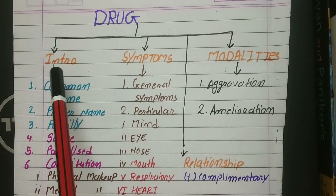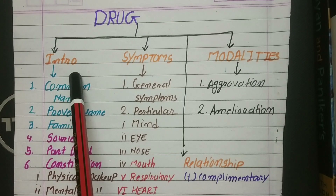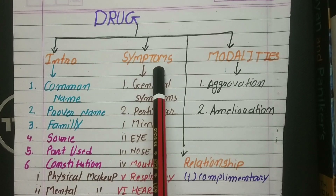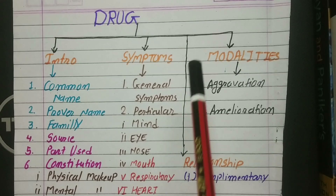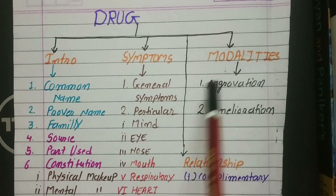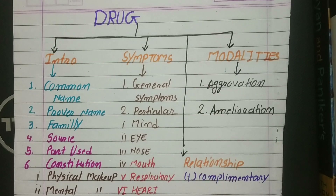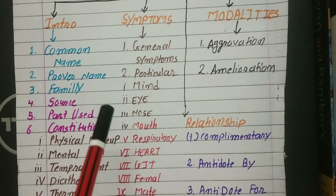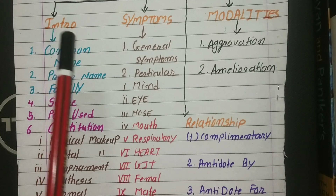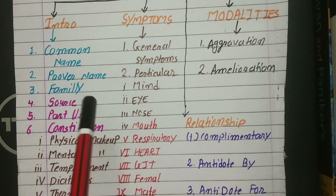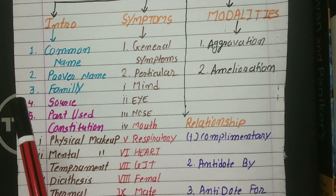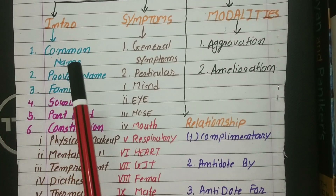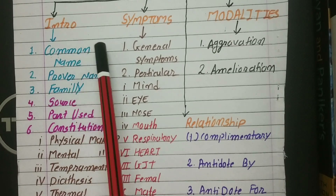The chart has headings of Introduction, Symptoms, Relationships, and Immortalities. So let's get started. First of all, if we are asked a drug in Materia Medica, we write it in the paper starting with an introduction.